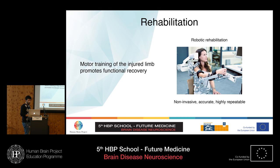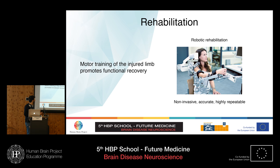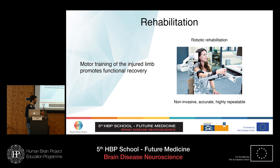Now I want to briefly discuss rehabilitation. Rehabilitation means many things, but we are focused on robotic rehabilitation. The main advantages of this technique are that it is non-invasive, accurate, and reproducible. In other kinds of rehabilitation, the amount of work performed cannot be accurately quantified. In robotic rehabilitation, the treatment is highly reproducible, quantifiable, and can be done at home since the robot can be brought to the patient's home.